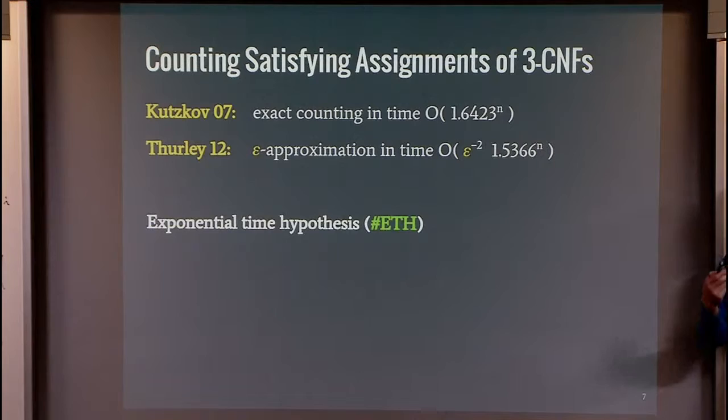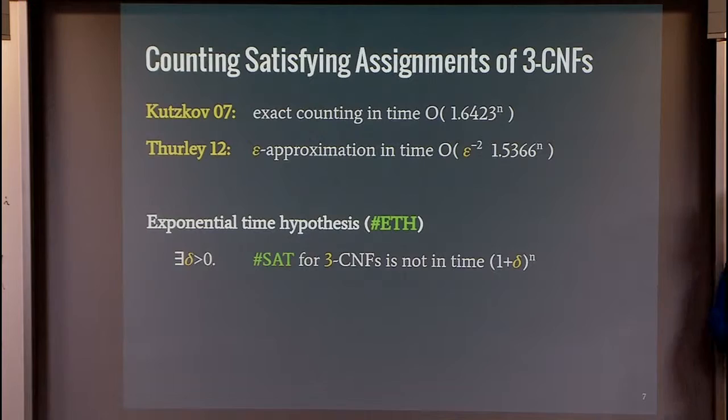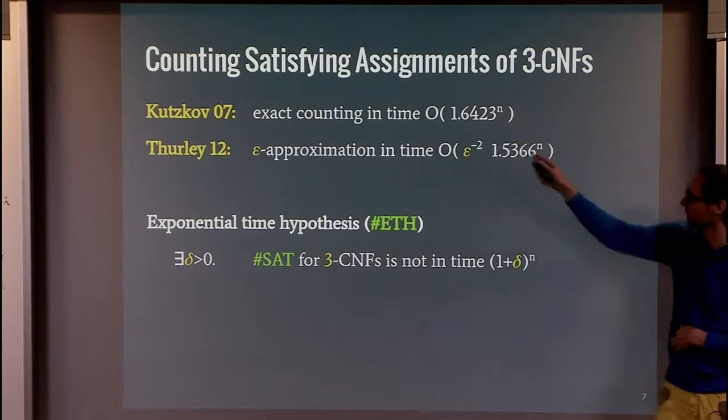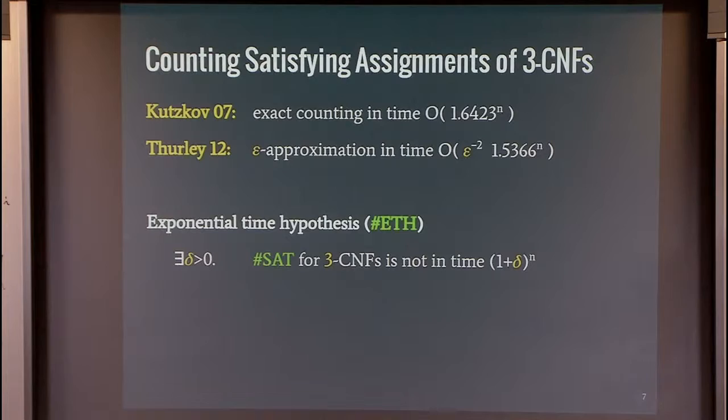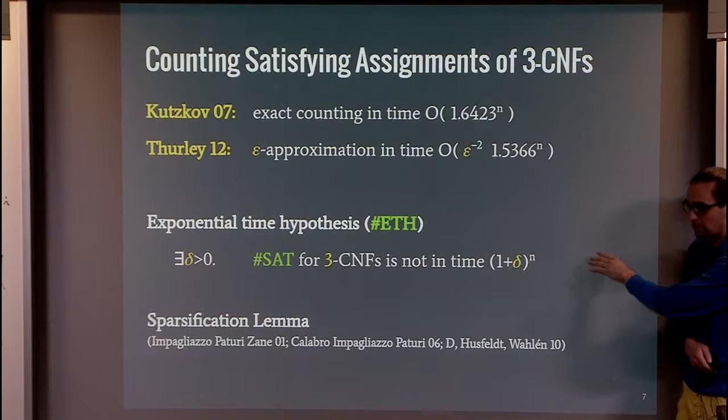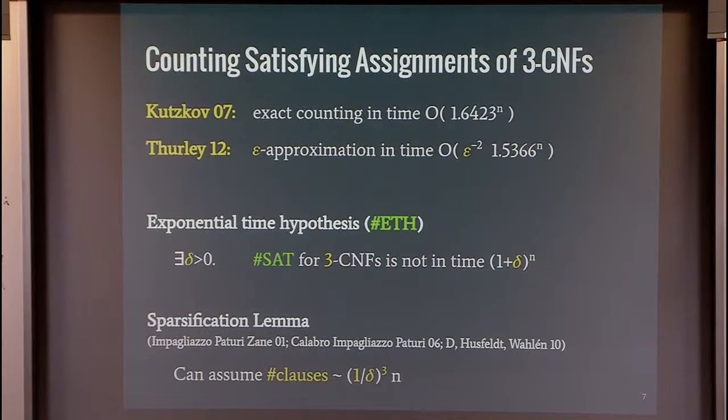Given that we can do faster than 2^n, one question is: will it be a constant times 2^n? The exponential time hypothesis says that yes, there is a constant delta such that counting CNF-SAT for 3-CNF formulas cannot be done in time (1+delta)^n. If delta happens to be 0.6423, then we already have found the best algorithm, but this seems rather—we have no reason to think this should be the final answer.